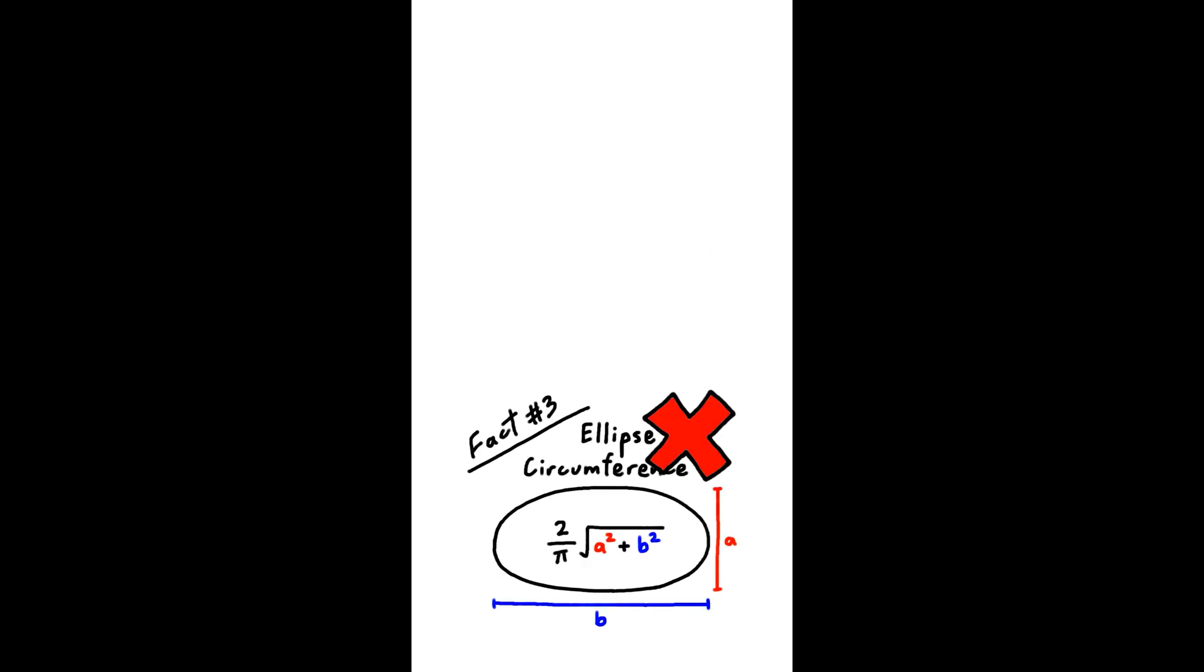I made up the third fact. This formula is completely wrong. You can tell because circles are also ellipses and they don't have pi in the denominator. What's interesting is that there isn't any formula for the circumference of an ellipse. You need to use approximations.